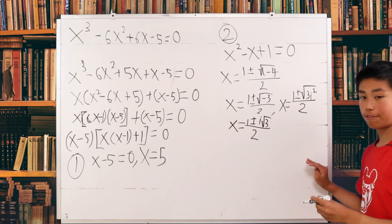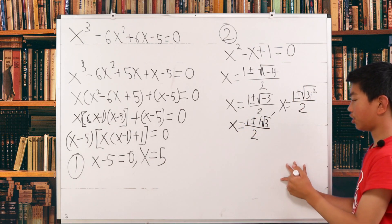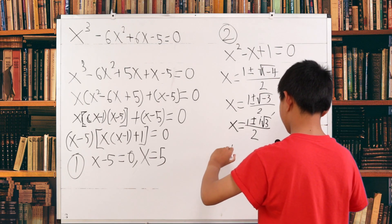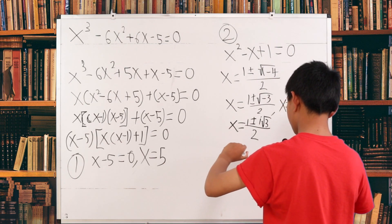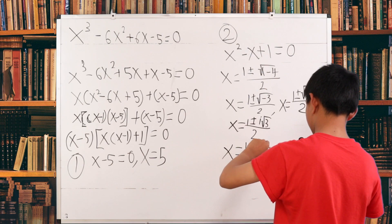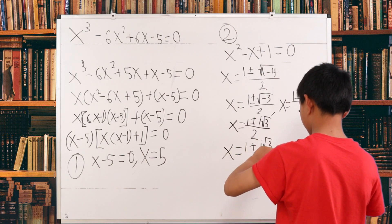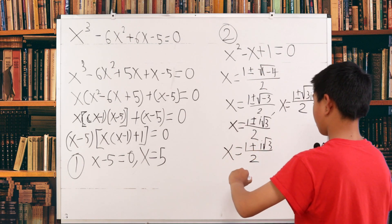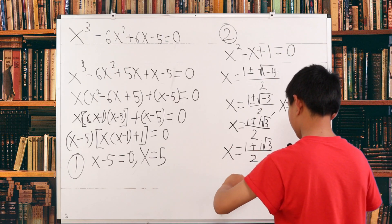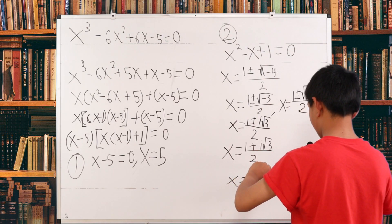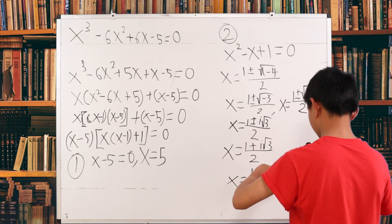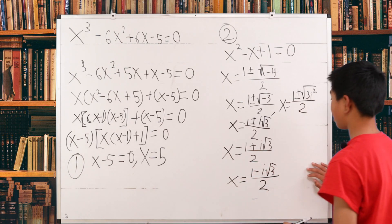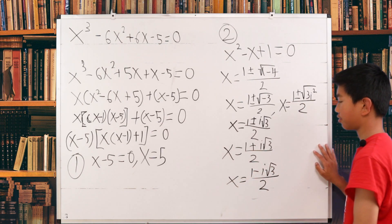So we have three answers: the first is x equals 5; the second is x equals 1 plus i times the square root of 3, over 2; and the third is x equals 1 minus i times the square root of 3, over 2. We now have all three answers.